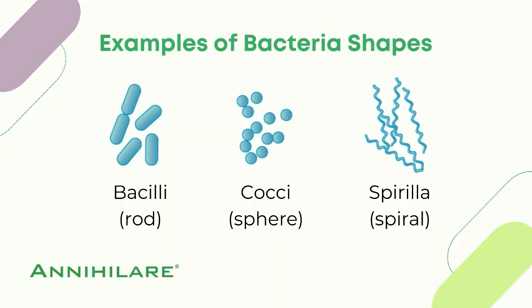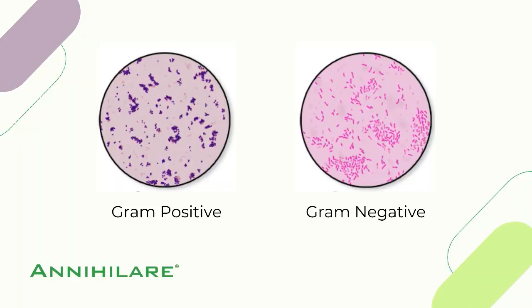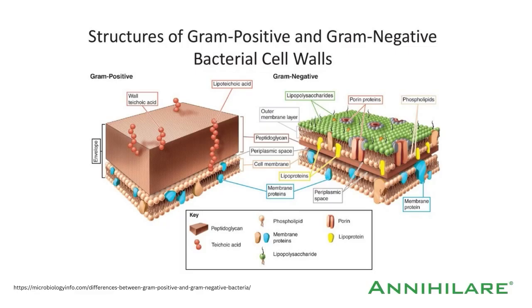Bacteria can exist in various shapes, like the rod, sphere, and spiral shapes you see here. But when it comes to disinfection, we're mainly only concerned about a specific dichotomy — are they gram-positive or gram-negative? Here is a clip I found online that shows a lot of intricate parts regarding the two types.